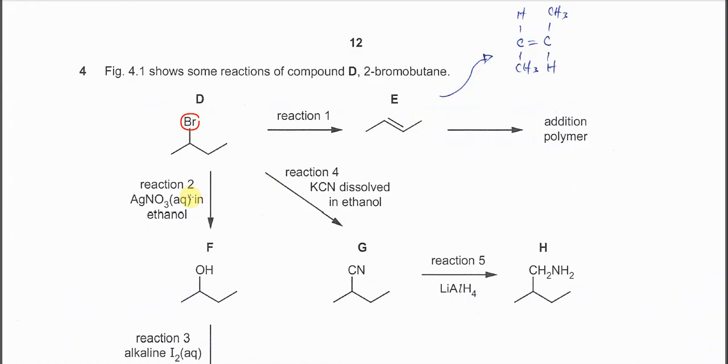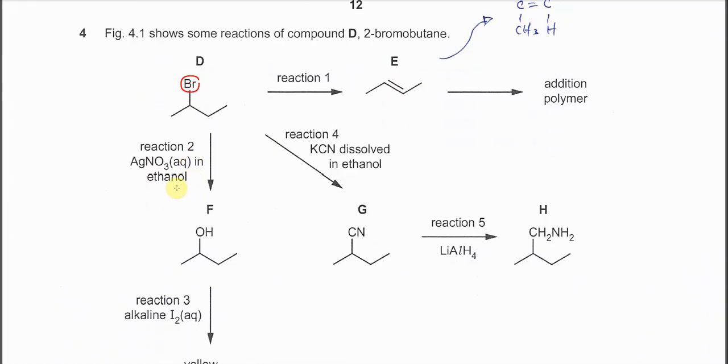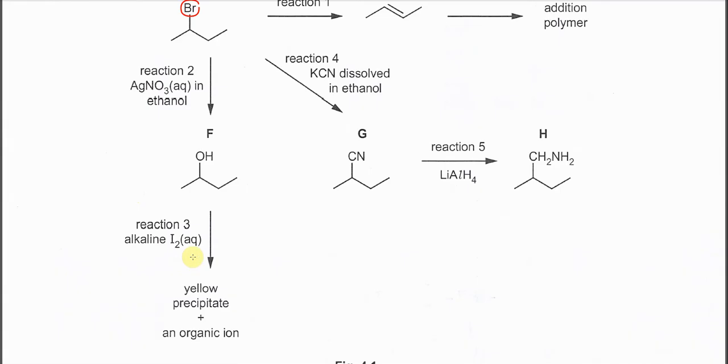For reaction 2, when the silver nitrate in ethanol is used, we know that the bromine will be substituted by OH and after that the silver will form silver bromide, the cream precipitate, and after that it will undergo reaction 3.